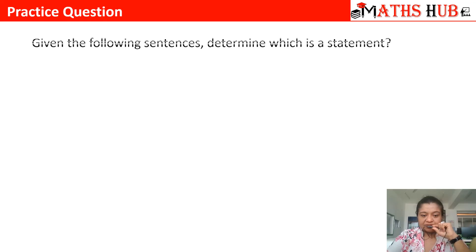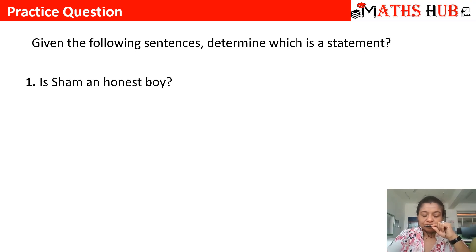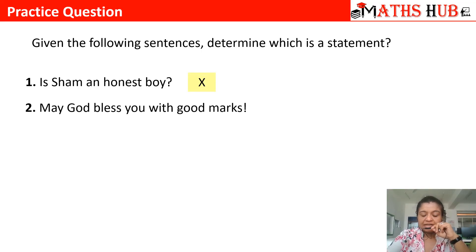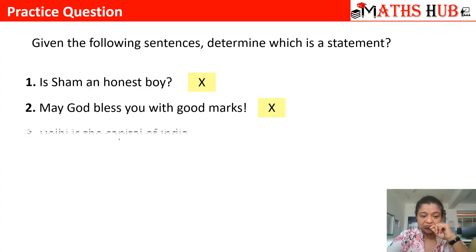Here are some practice questions — determine which of these sentences is a statement. The first is 'Is German an honest boy?' — this is an interrogative sentence, so this is not a statement. The second is 'May God bless you with good marks' — this is an exclamatory sentence, and a statement cannot be exclamatory, so this is again not a statement.